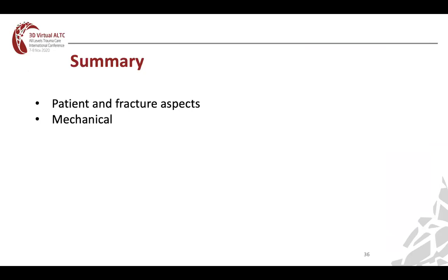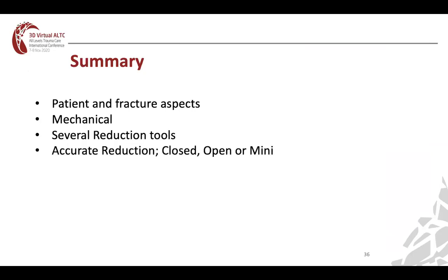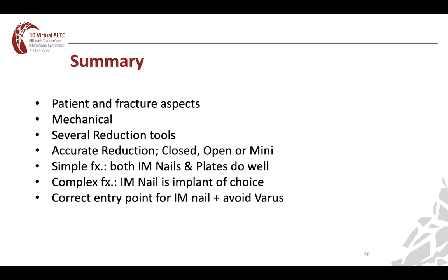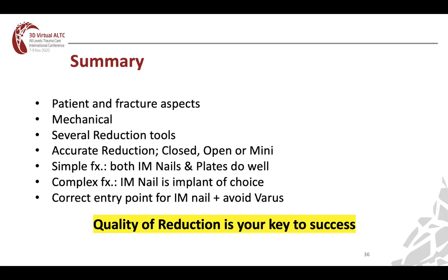In summary, we spoke about the patient and fracture aspects — two groups of patients, how this fracture displaces, the mechanics, and the tensile and compressive forces on implants. Several reduction tools were discussed, and we stressed that accurate reduction is needed whether done closed or open before passing nails. For simple fractures, both intramedullary nails or plates do well; but for complex fractures, intramedullary nails are the implant of choice. Choose the correct entry point, avoid varus, and confirm quality of reduction before reaming — that is your key to success. Thank you for your participation and I will be available for questions.